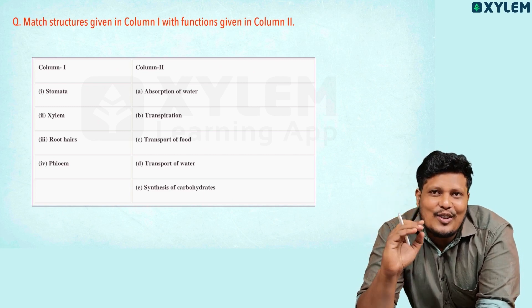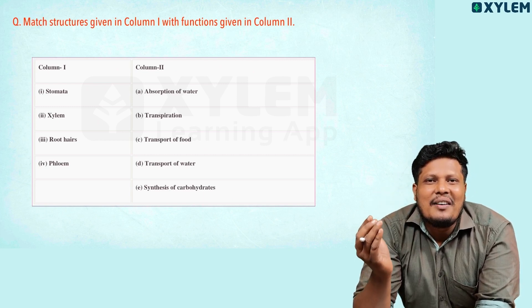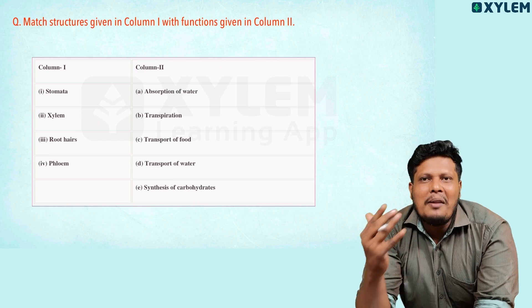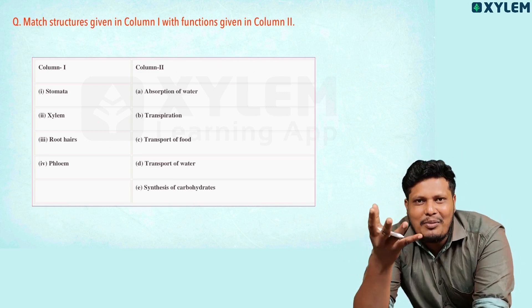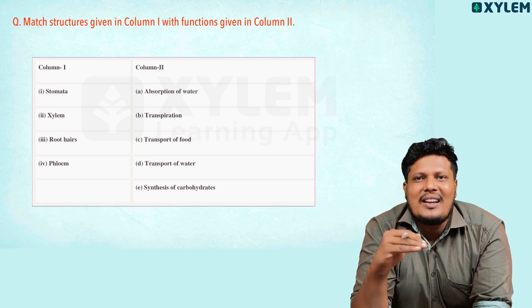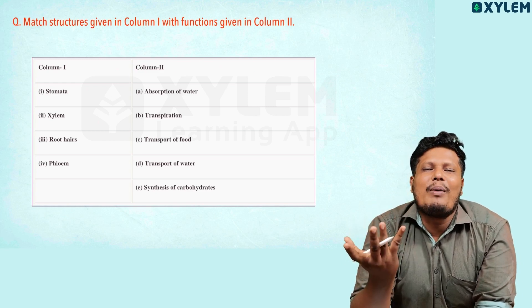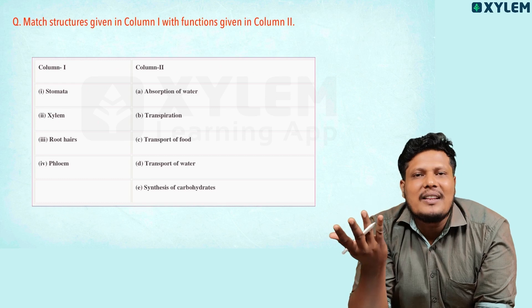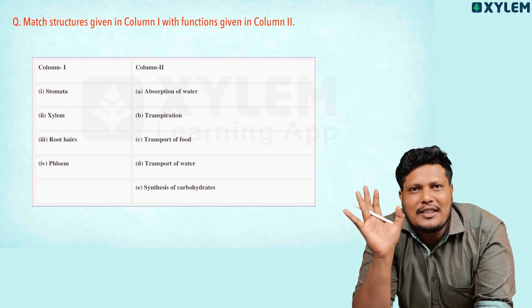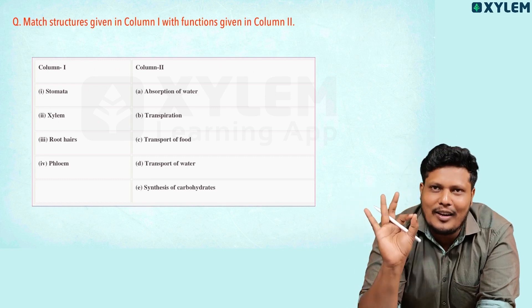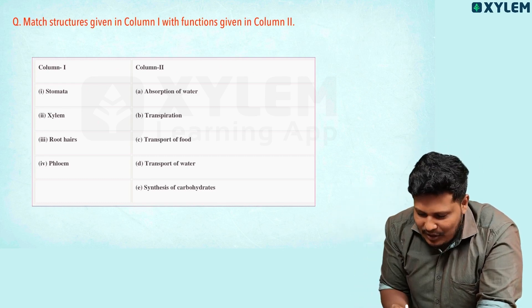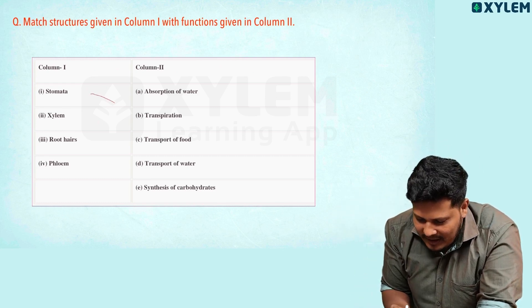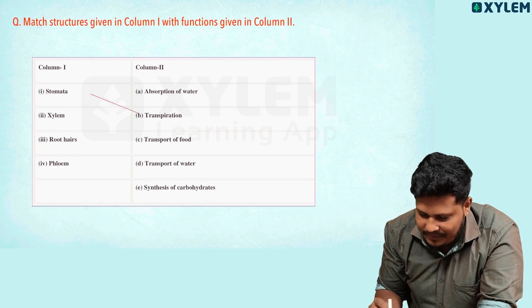The stomata function is transpiration. What is transpiration? It is the loss of water from the aerial part of the plant in the form of water vapor. So stomata is associated with transpiration.